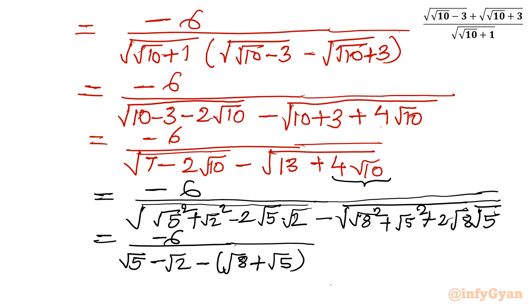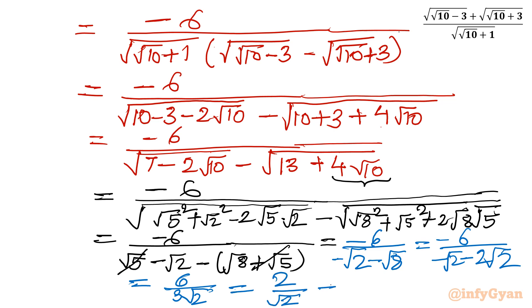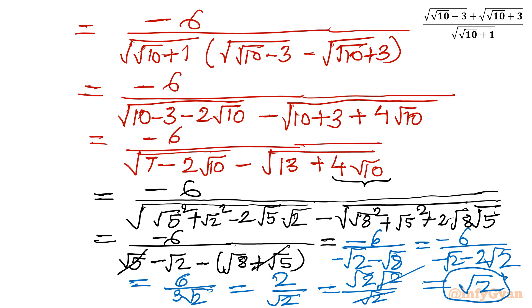Now cancel √5 and minus √5 in the denominator. What remains is minus √2 minus √8, which is minus √2 minus 2√2, giving minus 3√2. So the expression is minus 6 over minus 3√2. The minus signs cancel, leaving 6 over 3√2, which is 2 over √2. Writing 2 as √2 times √2 and cancelling one √2 from numerator and denominator, our ultimate answer using rationalization of the numerator is also √2, matching the correct answer.